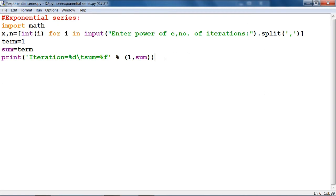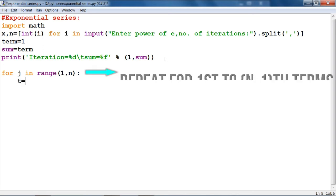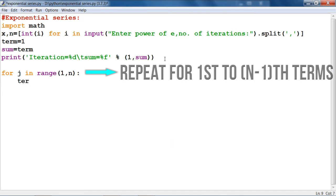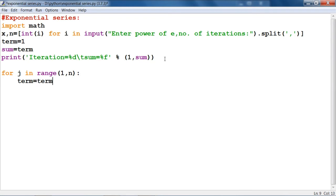Now we have to run the loop, a for loop. For j in range 1 comma n, then term equals to term multiplied with x by j. This will update the new term over the old term we have defined here as 1.